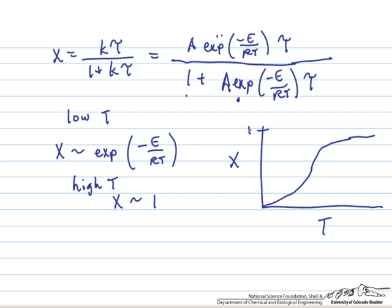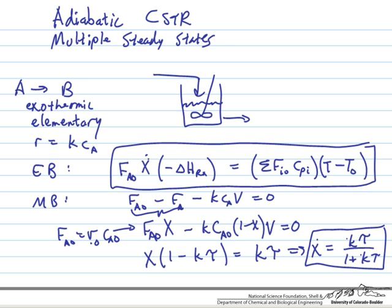Alright, now what we want to do, this is our material balance. Now what we want to do is plot our energy balance on this same plot, because the reactor will actually operate at a point that satisfies both the energy balance and the material balance. So it will be a point where the energy balance and material balance curves intersect.